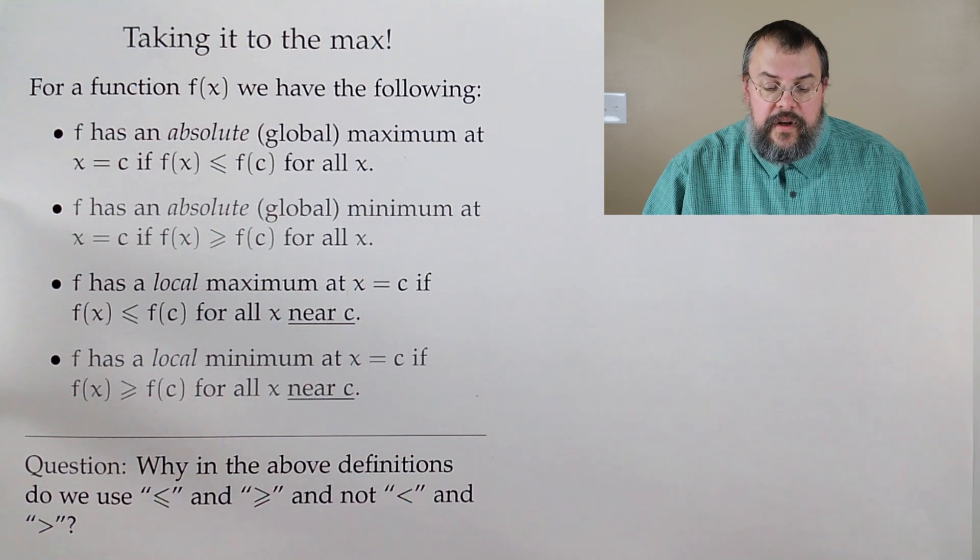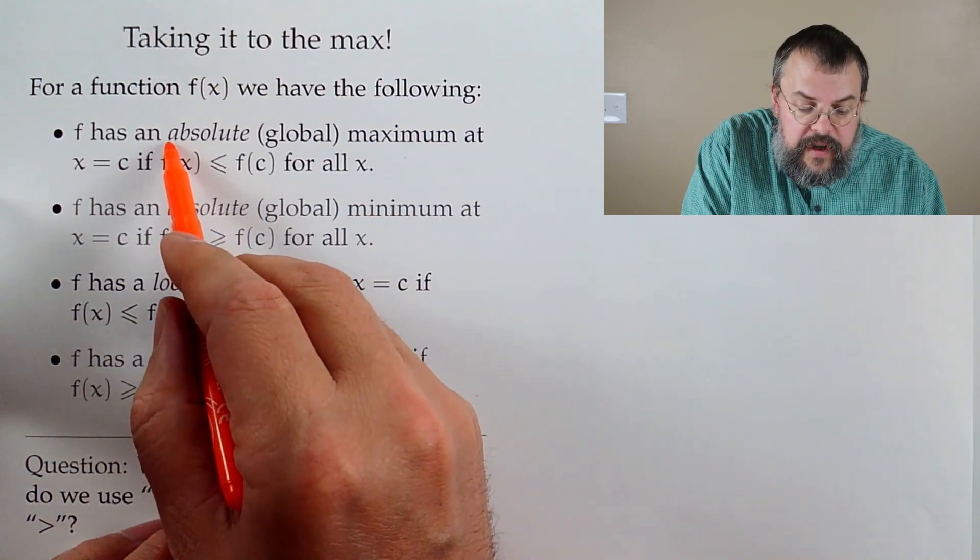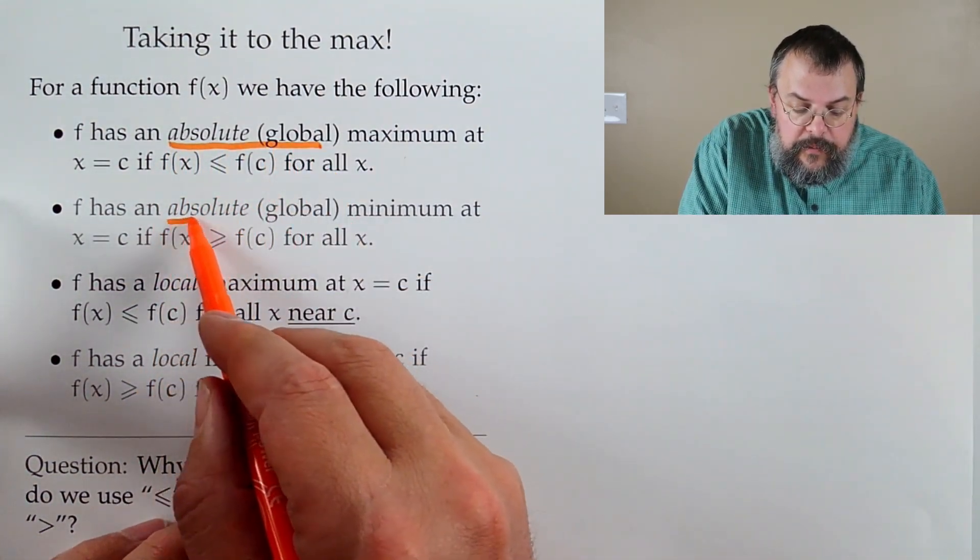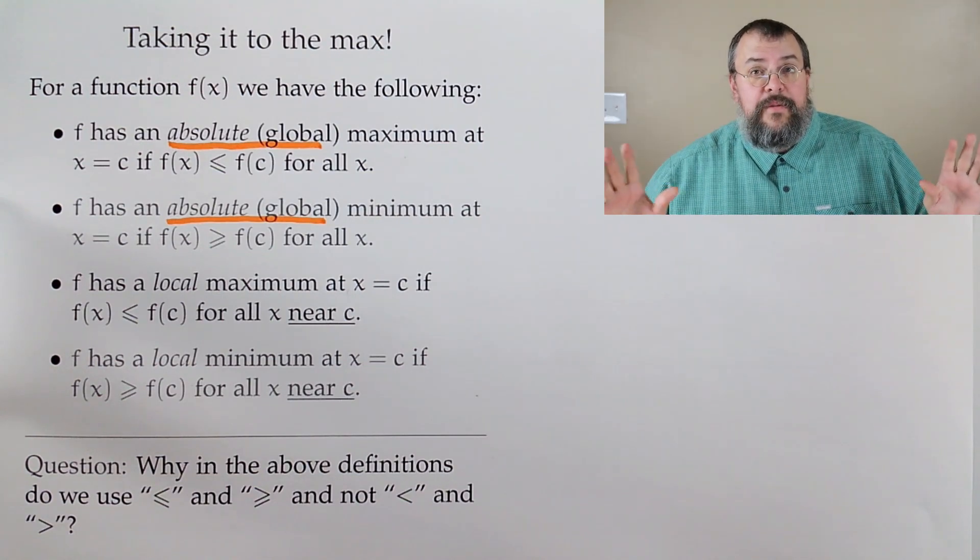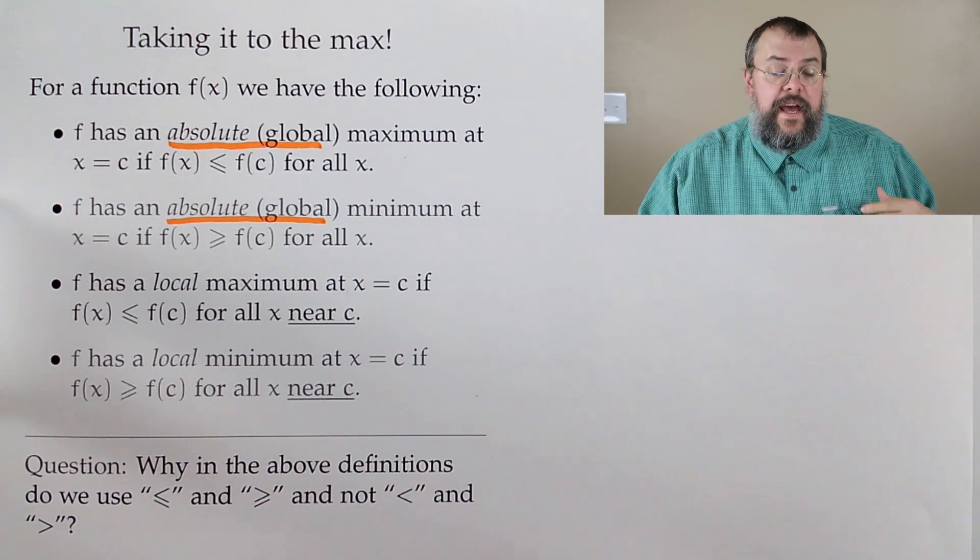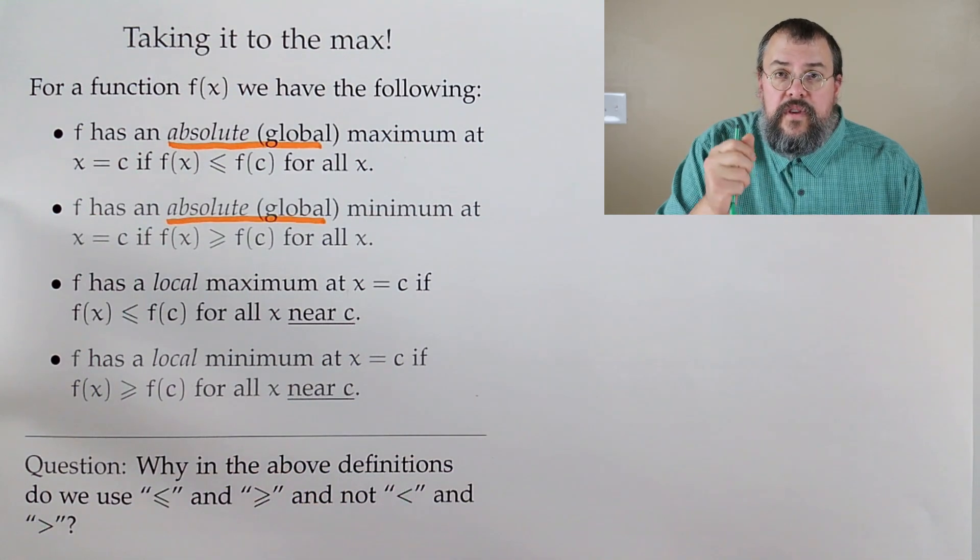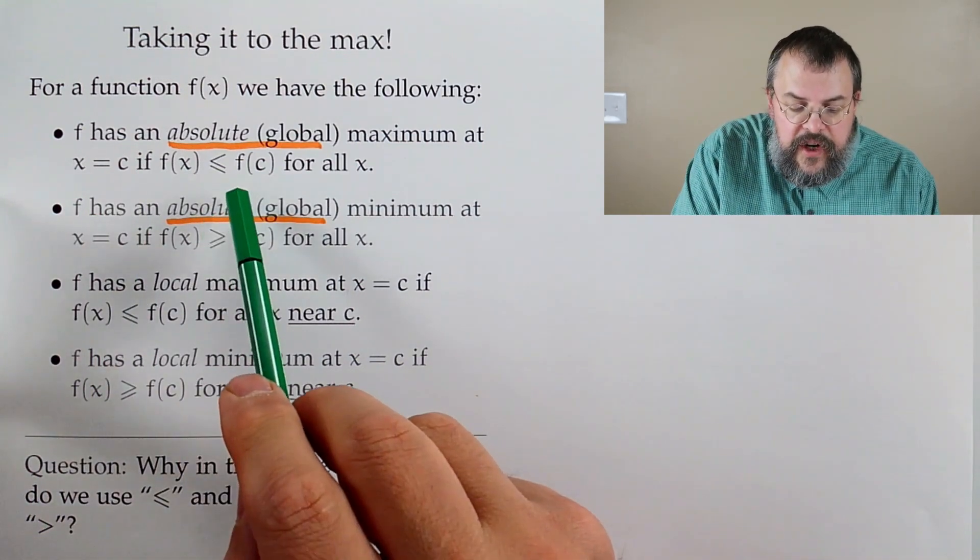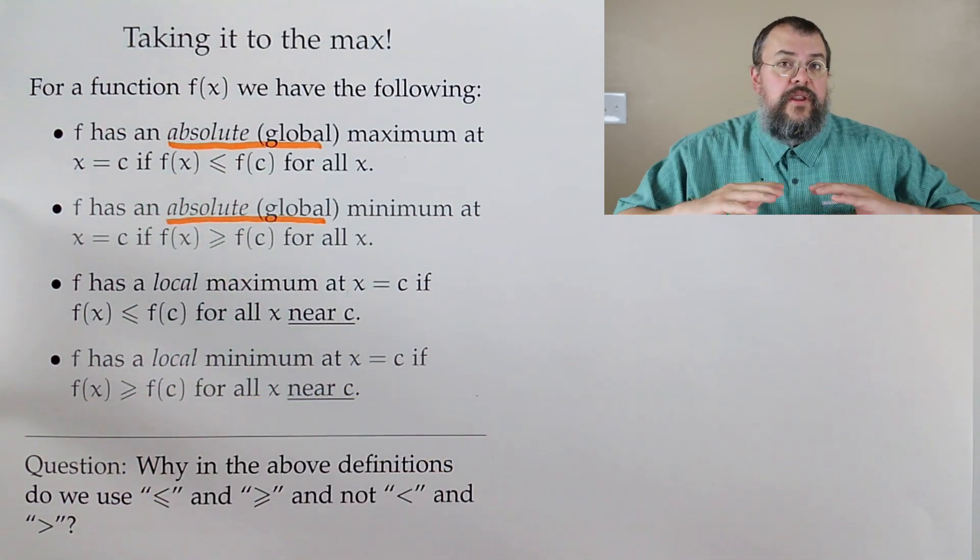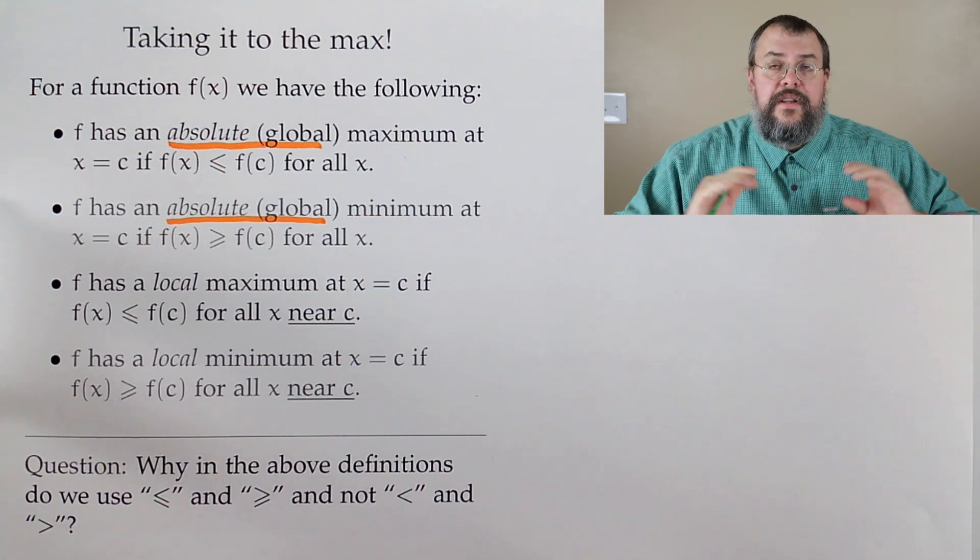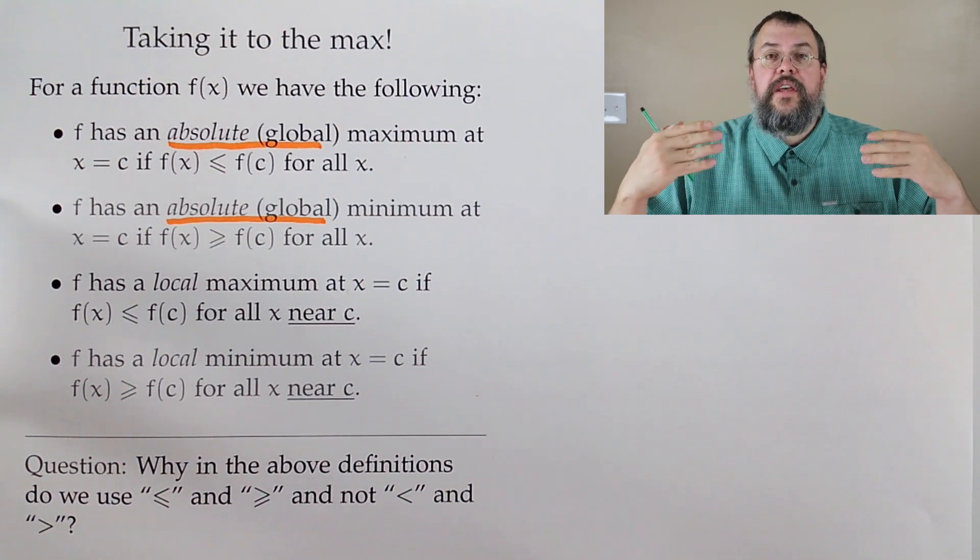We're going to start by defining what we mean by maximums and minimums. There's two flavors. We can talk about something called an absolute, sometimes called global, minimum and maximum. Suppose I want to say I am the absolute maximum of the function. We're talking about the outputs of the function. If at some value for x, c, the value of the function at c is always greater than or equal to the value of the function anywhere else, this is the largest possible value the function can attain. Nothing gets larger than that.